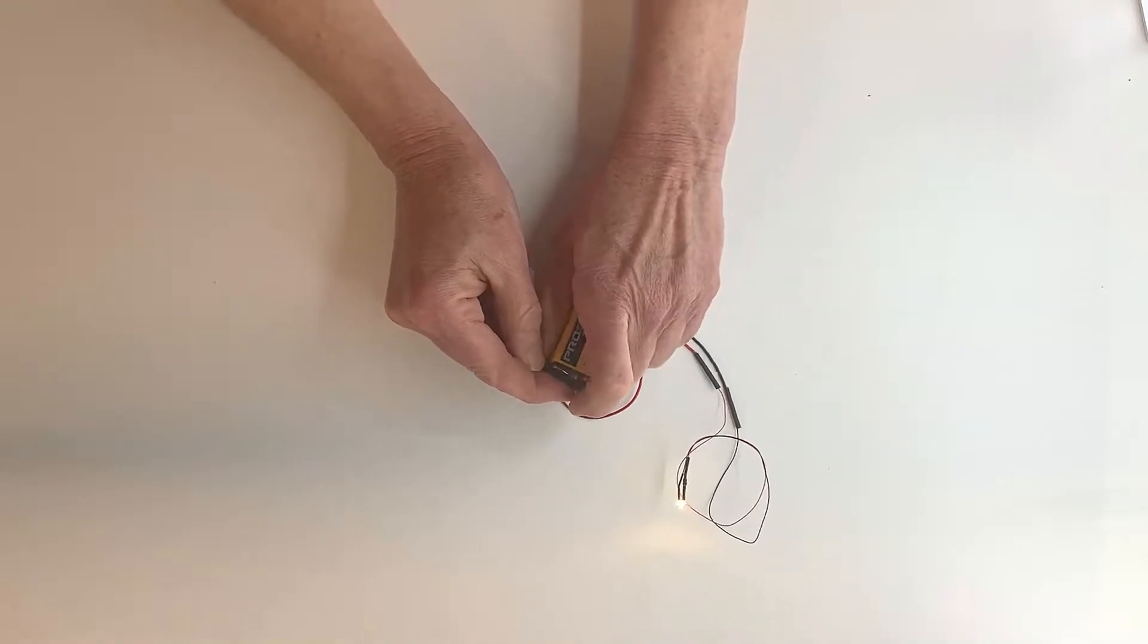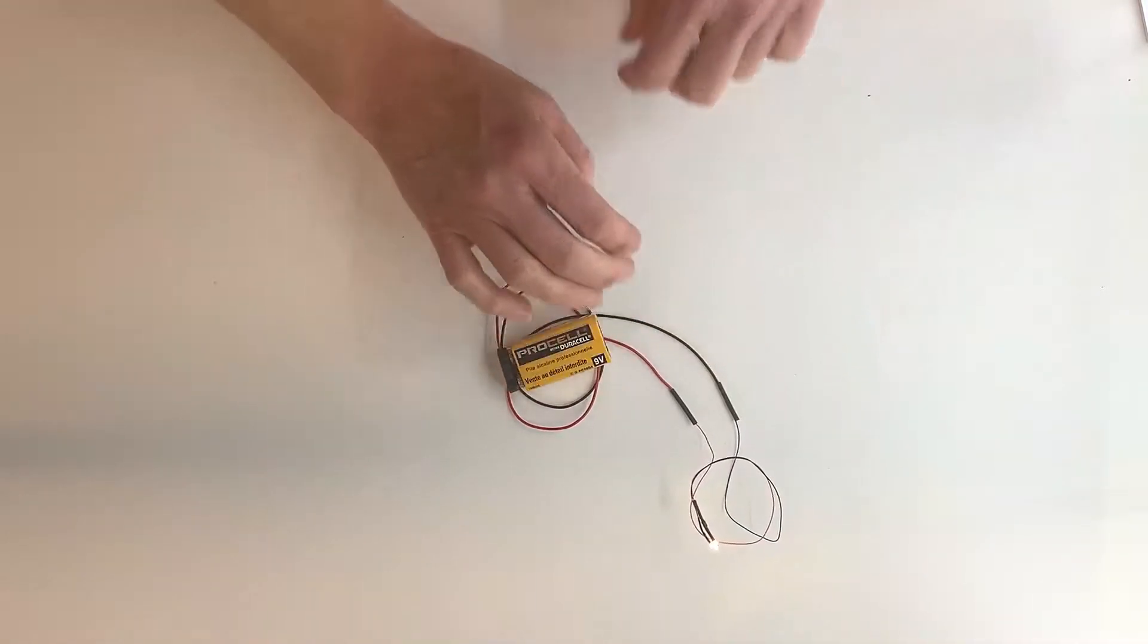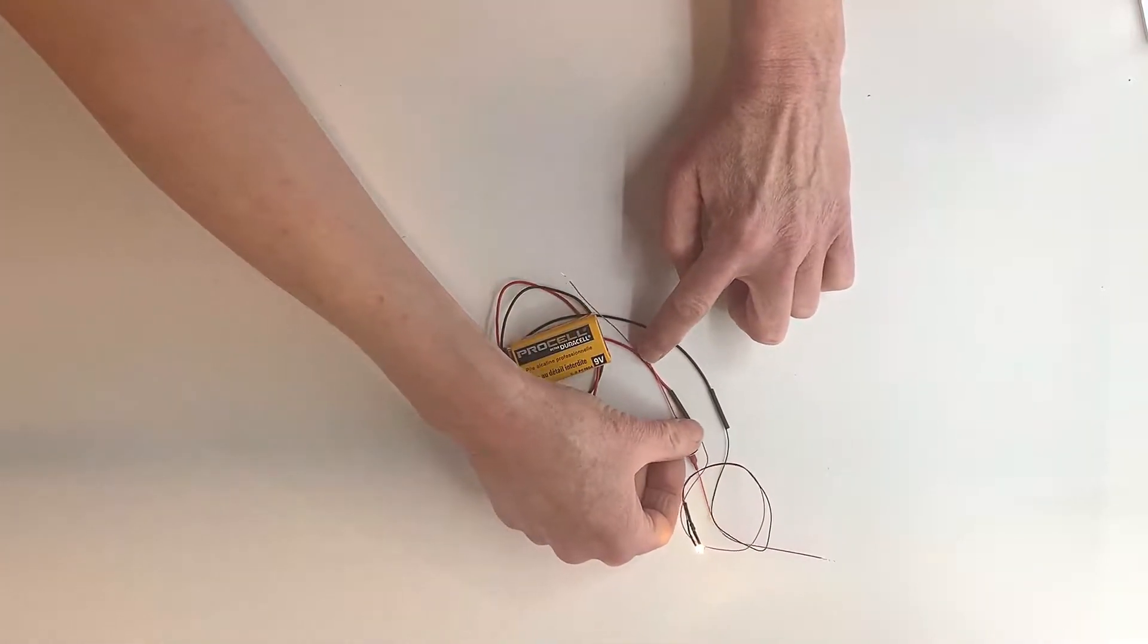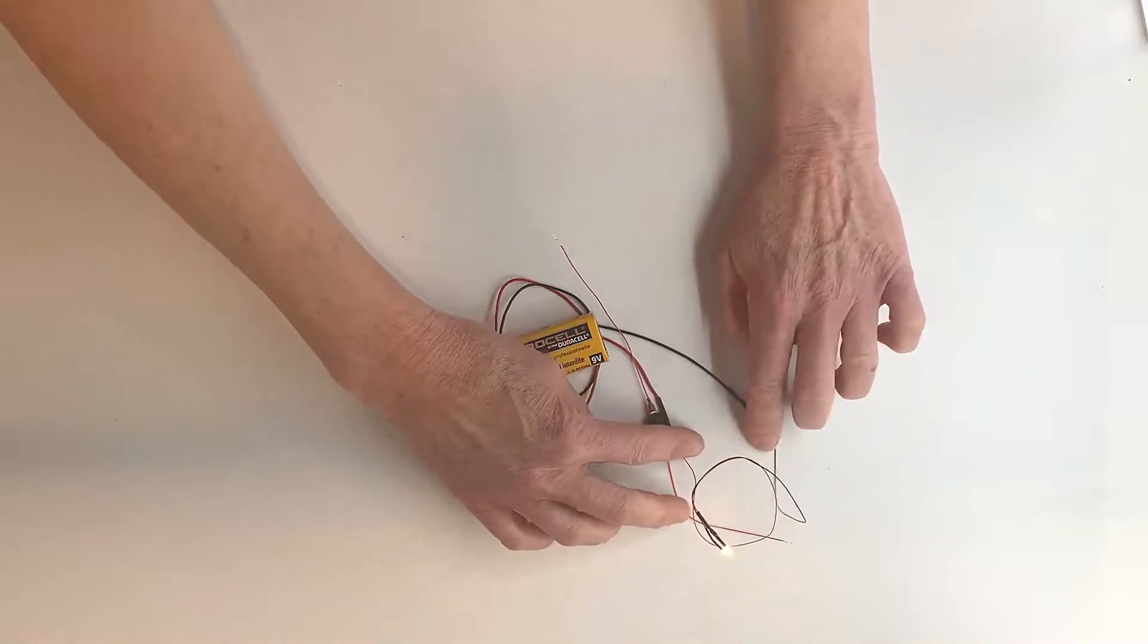To make things easier, you can add a switch to the red wire. If you put a switch in here, one end of the switch goes to power and the other end of the switch goes to the LED.